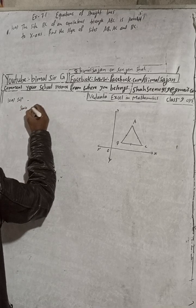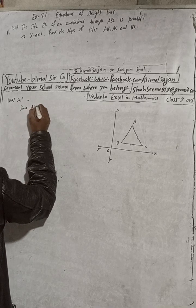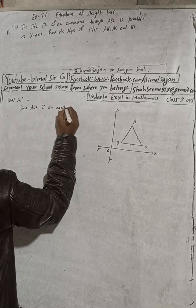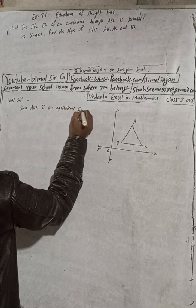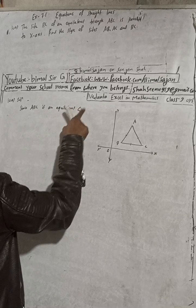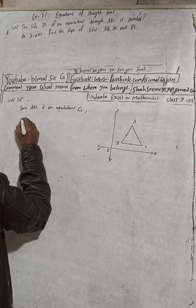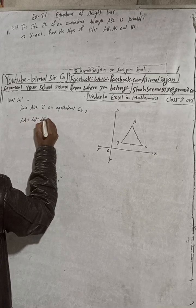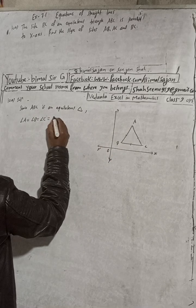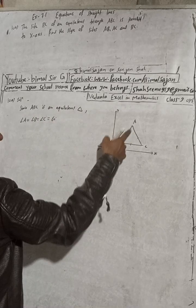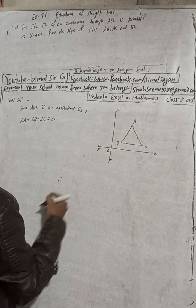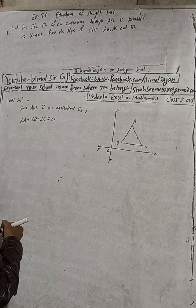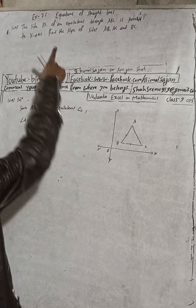Since ABC is an equilateral triangle, angle A is equal to angle B is equal to angle C, and all are equal to 60 degrees.